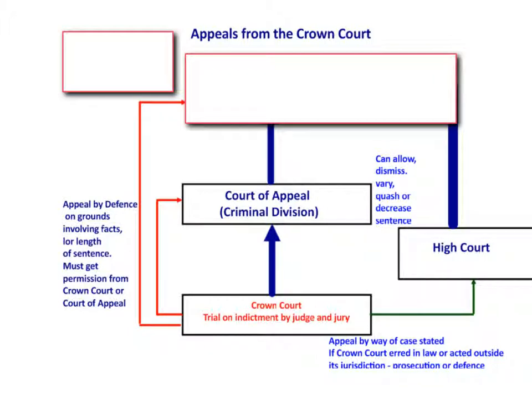So those are the two main appeal routes from the Crown Court: by the defence to the Court of Appeal Criminal Division, or by either side on a point of law to the High Court.